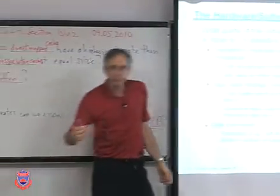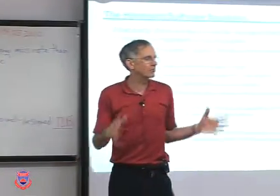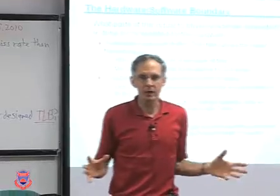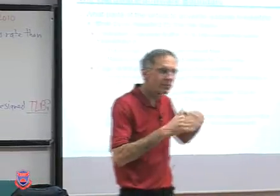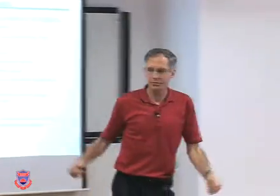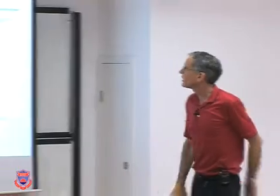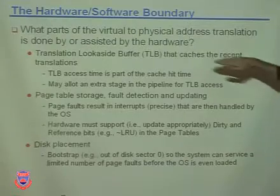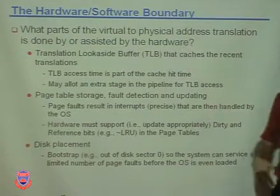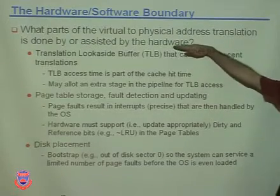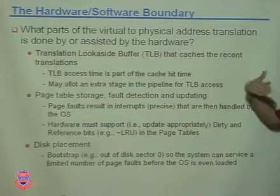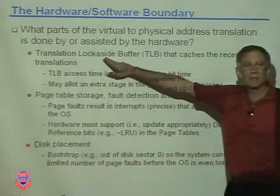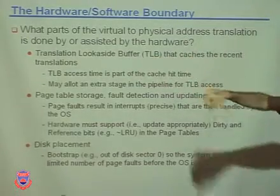Now we'll summarize all of Chapter 5. The next few slides cover the key concepts. First: what parts of virtual-to-physical address translation are done by hardware? The most important part is the Translation Look-aside Buffer, which is a cache that follows all the principles of caching we've already studied.